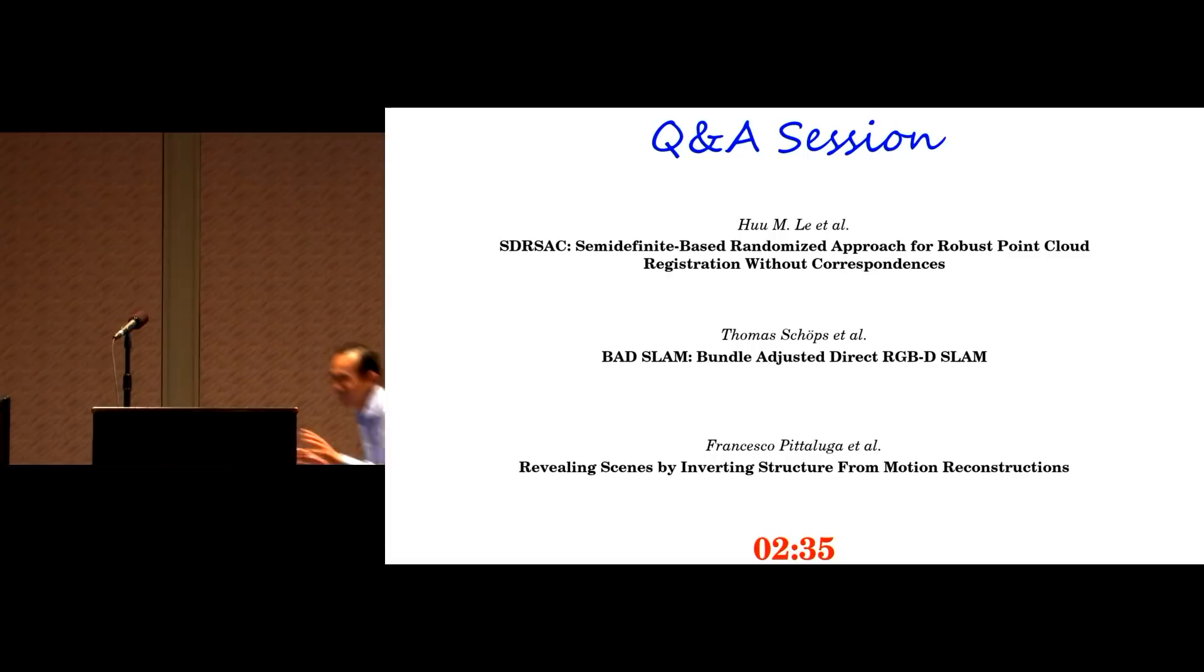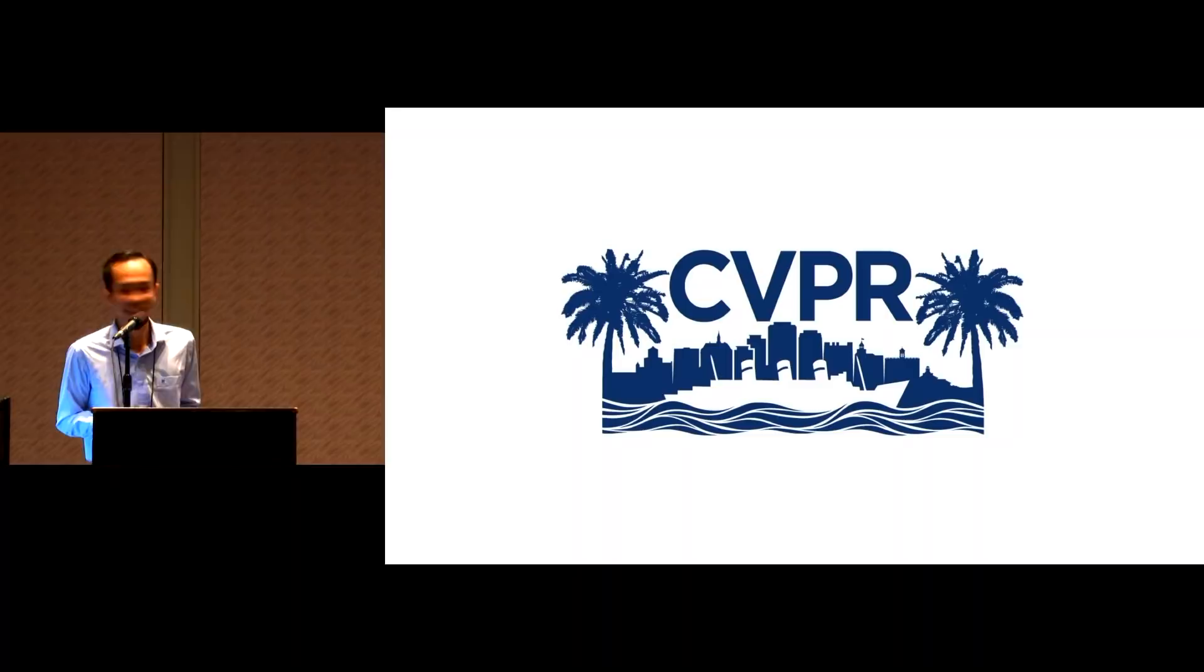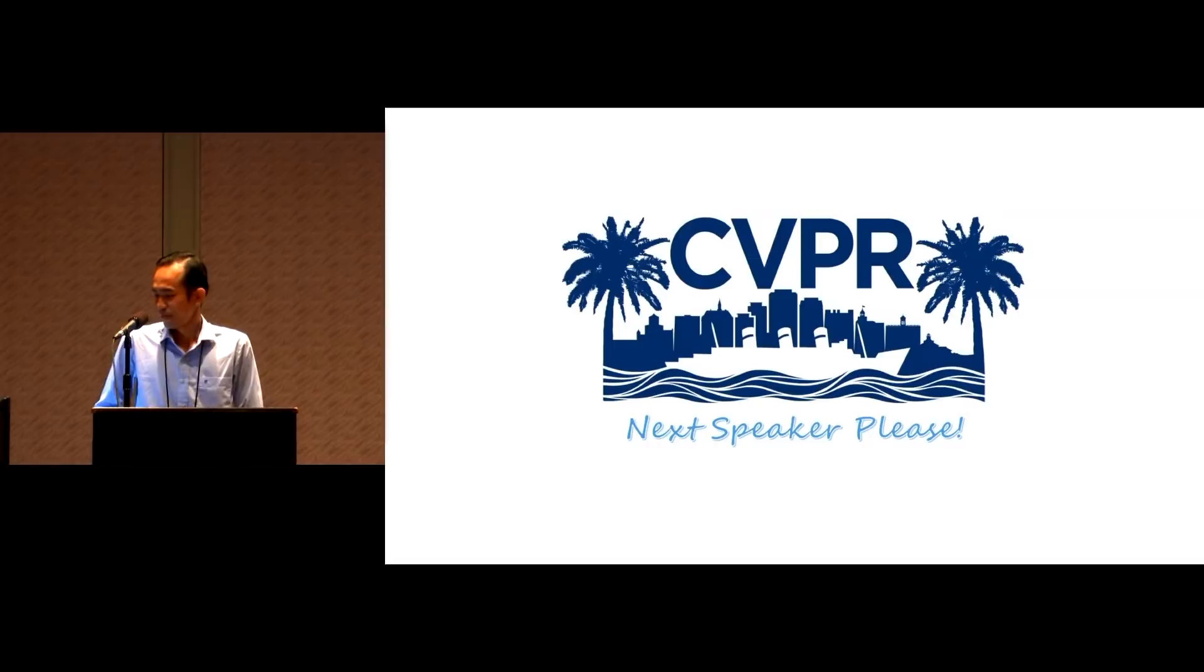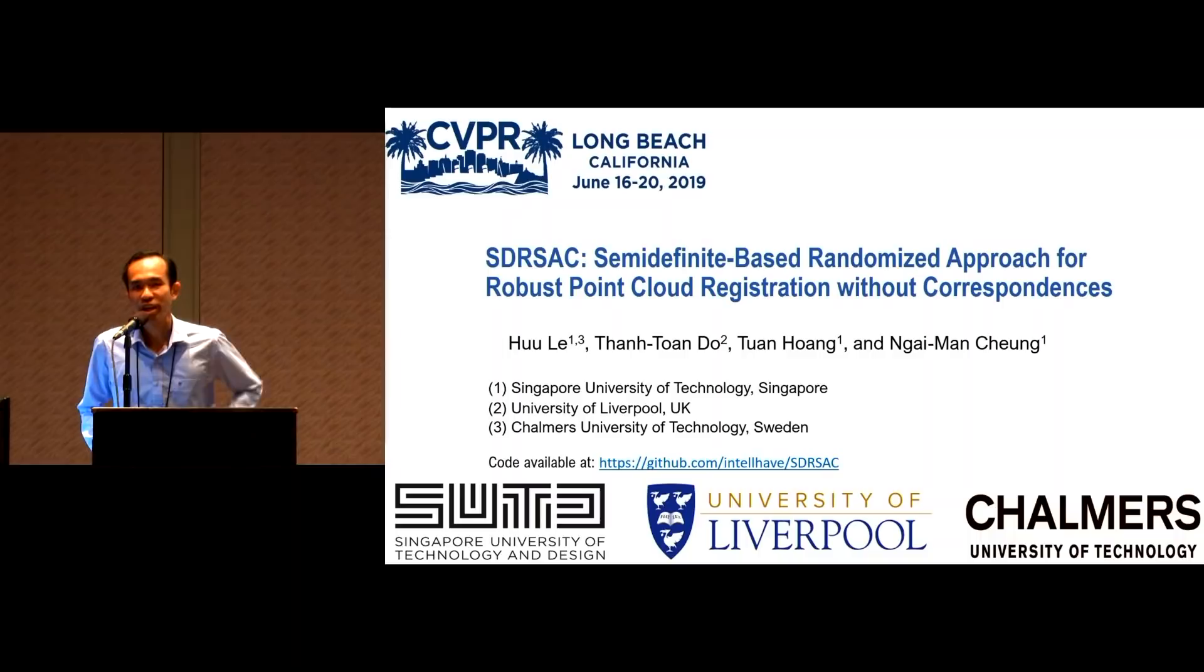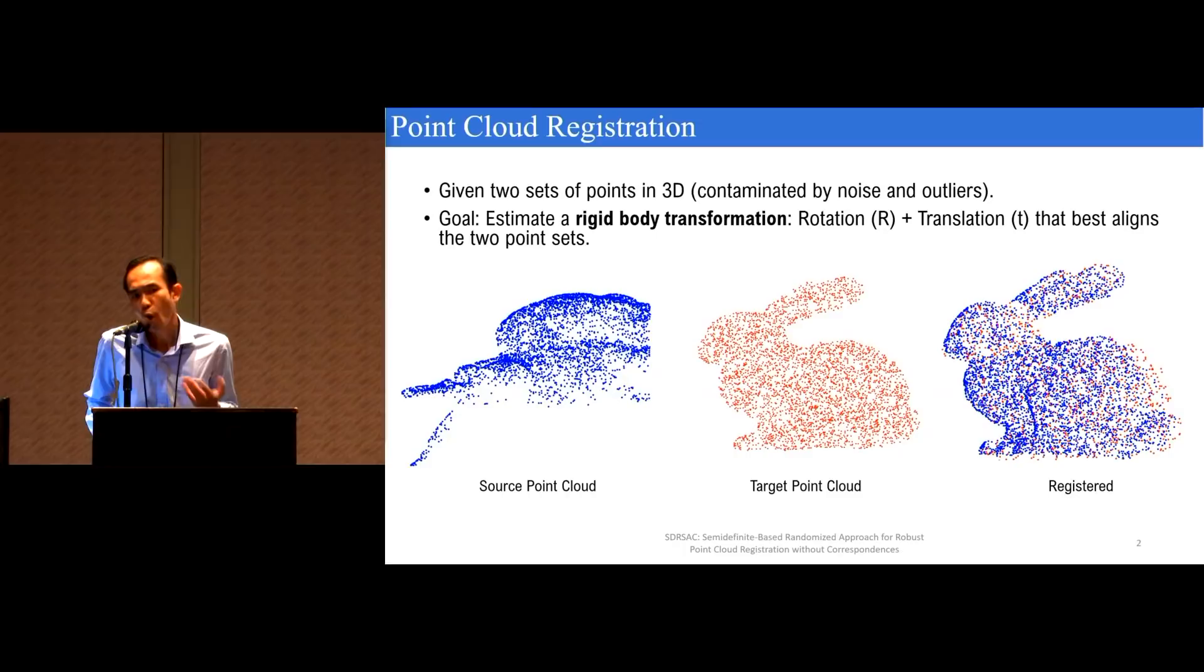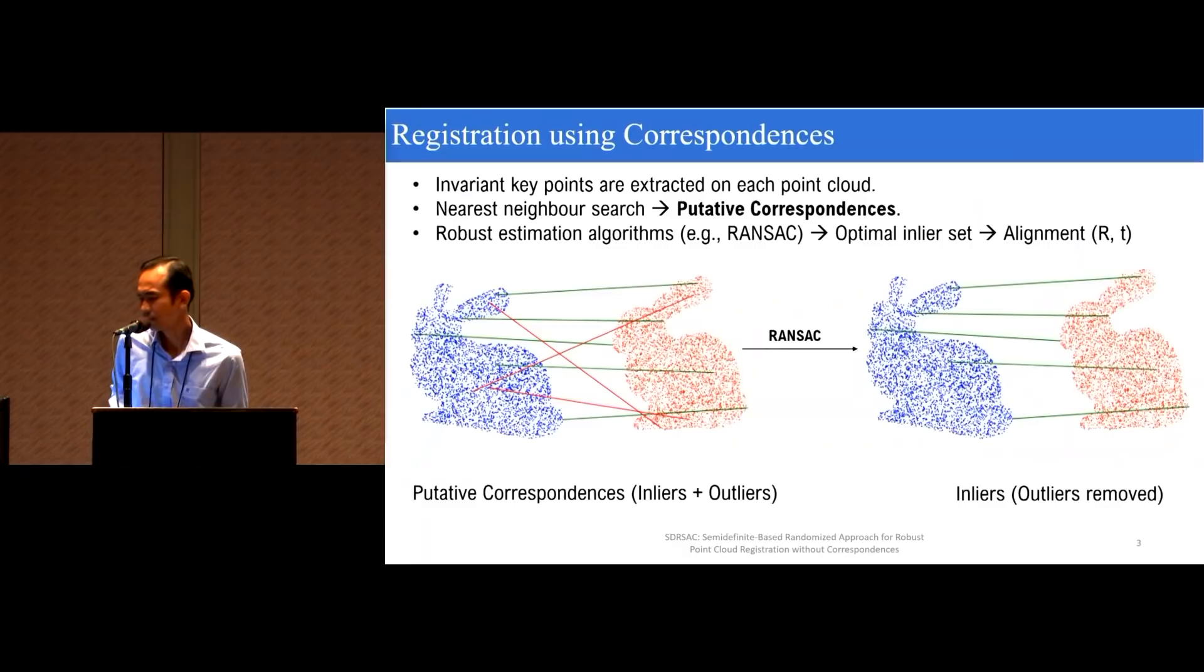Hello, everyone. My name is Hao. I'm the first speaker. Today I'm going to present our work on a new algorithm for robust point cloud registration without correspondences. So in this problem, we are given two sets of points in three dimensions that may be contaminated by noise and outliers. And the goal is to estimate the rigid body transformation, namely a rotation and a translation, that best aligns the two point sets.